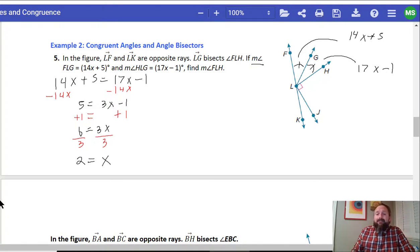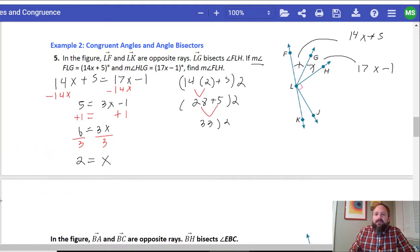Great job. But it's asking, what is FLH equal to? So I know I could figure out this. If X equals 2, what is this? And if X equals 2, what is this? And add them together. Or I could just find one of them. I'm going to times 2 to 14 and then add 5. And then I know I'm going to multiply by 2. So doing that, I know I would get 28 plus 5 times 2. And 28 plus 5 is 33 times 2, which is 66. So 66 degrees is equal to the measure of angle FLH. There we go.